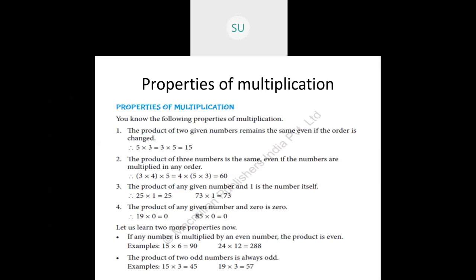For example, 5 times 3 equals 3 times 5, and both equal 15. Even with larger numbers: 15 times 5 is 75, and 5 times 15 is also 75. So the product of two given numbers remains the same even if the order is changed. This is the first property of multiplication.